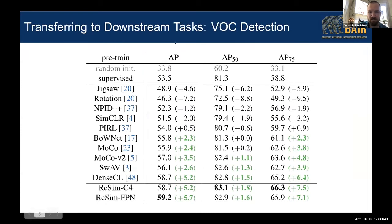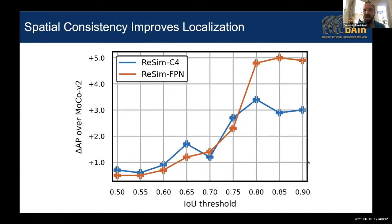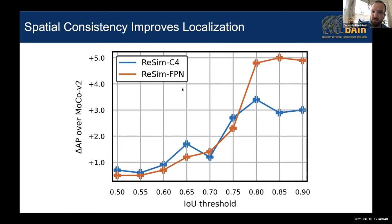Looking at a couple of results: on Pascal, a very saturated benchmark, we still outperform a supervised baseline by 5.7 points and competitive MoCo v2 and concurrent DenseCL baselines by around 2 points. What's really exciting is how leveraging spatial consistency leads to improvements in localization itself. We see this with two RE-Sim variants as we measure AP as a function of IOU threshold — as we require better object localization on Pascal VOC detection, the improvement over MoCo v2 grows substantially, confirming that the localization consistency learned by RE-Sim directly benefits downstream localization performance.